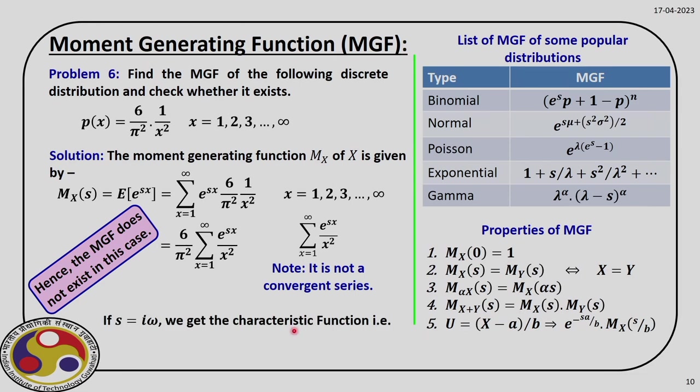If we put iω in place of s, we get what we call the characteristic function instead of the moment generating function, and this is also very similar to the Fourier transform. With that, our discussion on moment generating function closes here.